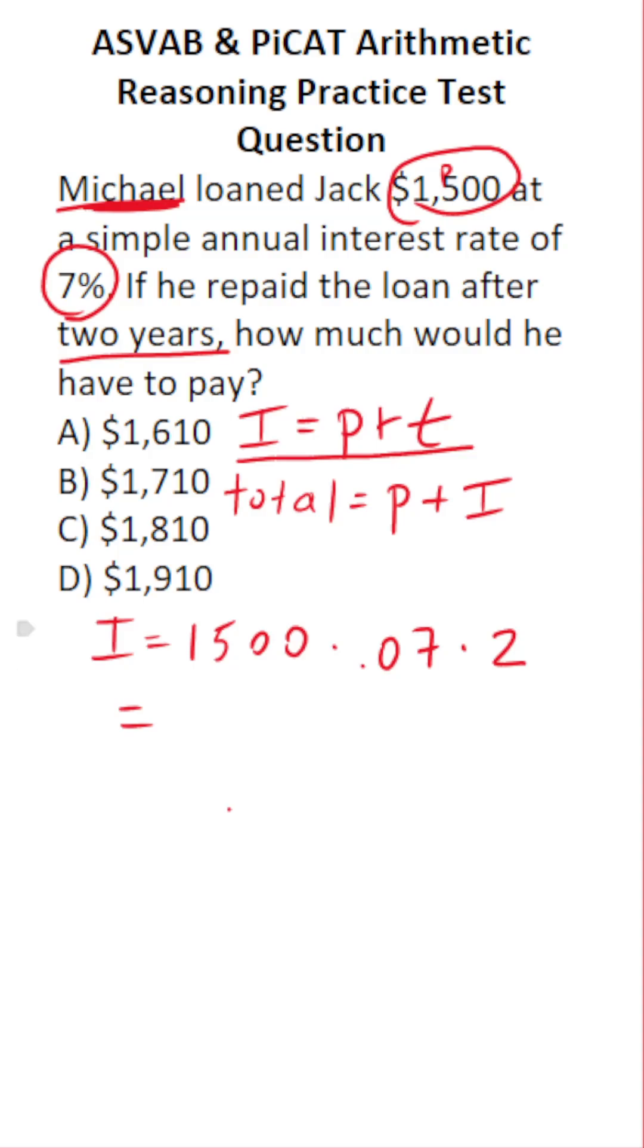All right, so let's do this math the easy way. $1,500 times two is $3,000 times 0.07. I'm going to do this off to the side so as not to make any mistakes.